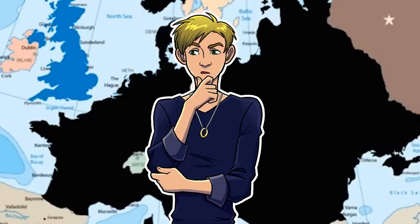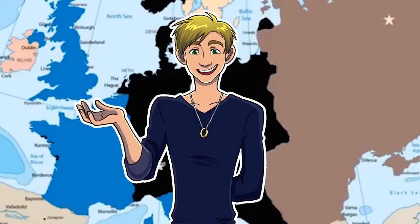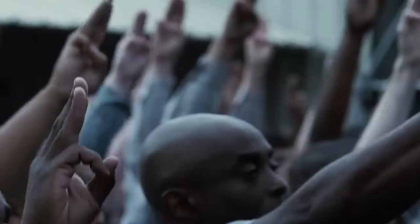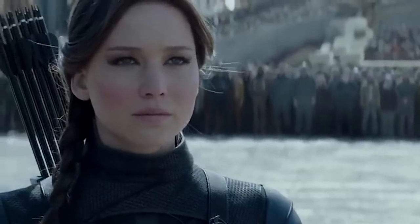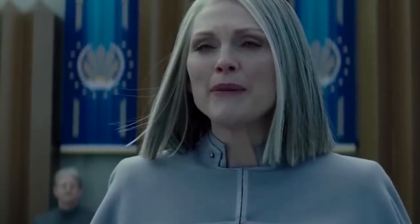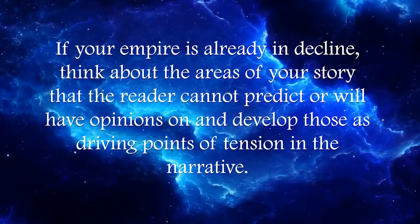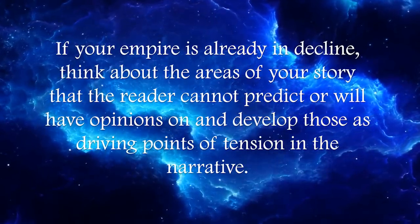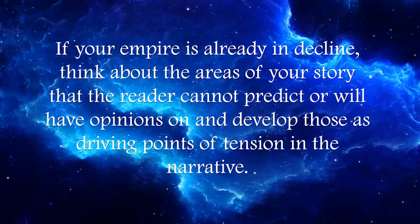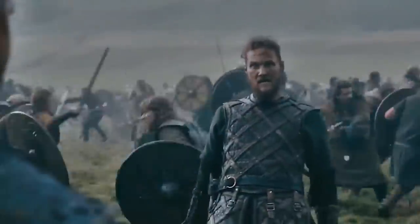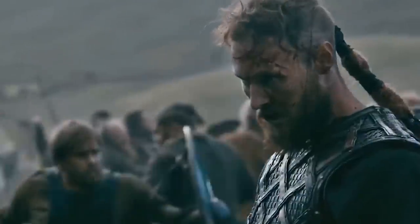A common exception to this is short-lived empires, like Nazi Germany, which collapsed incredibly quickly very soon after its formation. One problem we have as writers is that if the empire is already in decline, it can make it feel like less of a threat for our heroes. In The Hunger Games, the Capitol loses virtually every battle from the start. Collins addresses this by shifting the tension away from whether the rebels will succeed, to whether characters will survive and the morals around the methods of rebellion — such as Gale intentionally allowing the deaths of children, and Coin wanting to punish the Capitol's children in the aftermath. If your empire is already in decline, develop the areas your reader cannot predict or will have opinions on as driving points of tension.